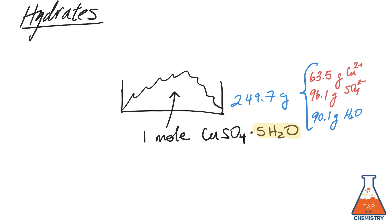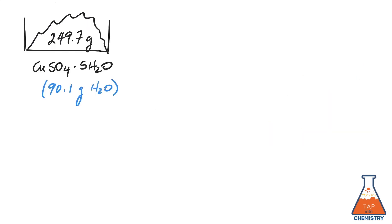Heating this hydrate will drive off the waters at different temperatures according to their chemical composition. At room temperature, copper sulfate will exist as a pentahydrate, which means that for every one copper ion and one sulfate ion you'll have five waters coordinated.